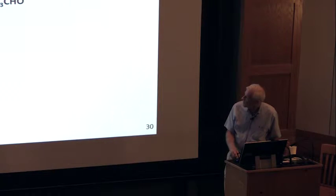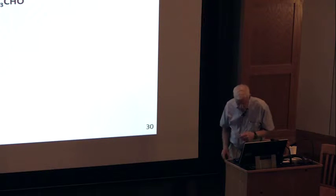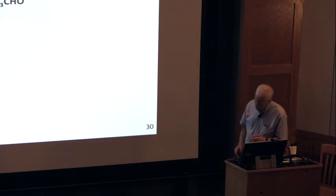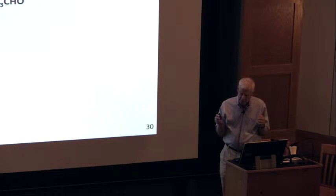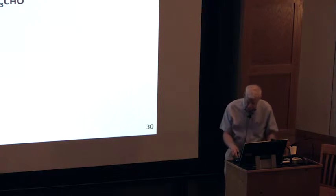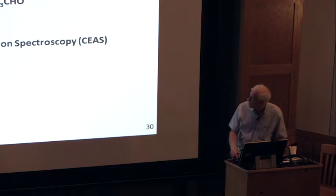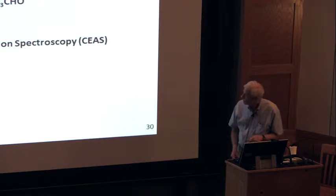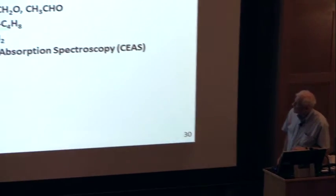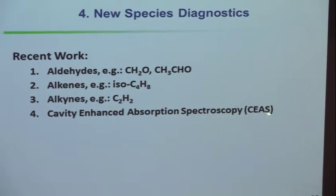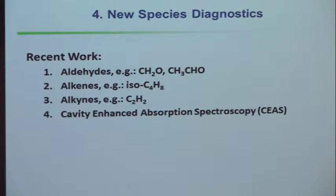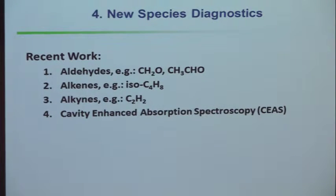We use OH quite a bit, but we're always interested in finding new species. One thing we've tried to do is measure formaldehyde and acetaldehyde. The aldehydes are important when you burn hydrocarbon fuels at low temperatures — they always produce some aldehydes — and we'd like to measure those as we go into the NTC region. We're also very interested in alkenes and alkynes like acetylene. I want to tell you about a new trick that allows much more sensitive measurements.